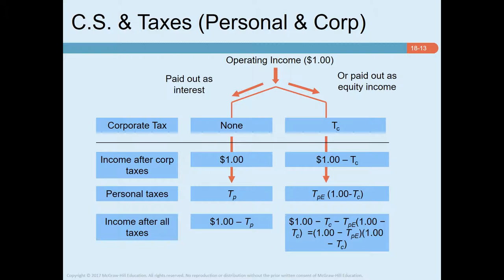When personal taxes are introduced, the firm's objective is no longer simply to minimize the corporate tax bill. The firm should minimize the present value of all taxes paid on corporate income — including personal taxes paid by both bondholders and stockholders. This diagram shows how corporate and personal taxes are affected by leverage. Depending on the firm's capital structure, a dollar of operating income will accrue to investors either as debt interest or as equity income.